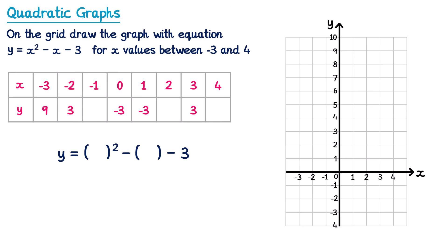Now we have x is negative 1. So let's put negative 1 inside these brackets. We've got y equals negative 1 squared which is positive 1, and then we're subtracting negative 1 which is like adding 1, and then subtract 3. So 1 plus 1 is 2, and 2 take 3 is negative 1. So for this one y will be negative 1.